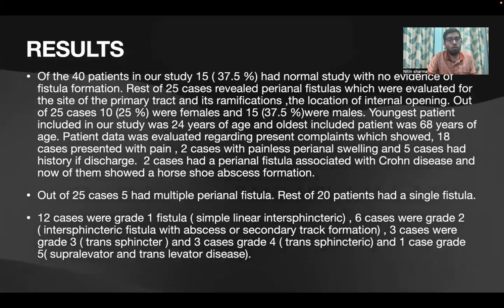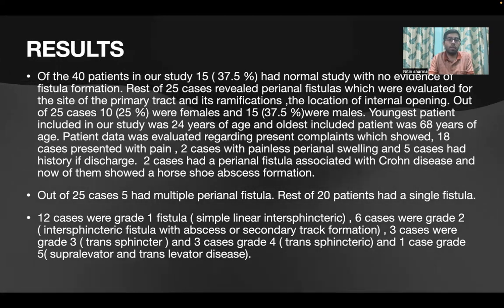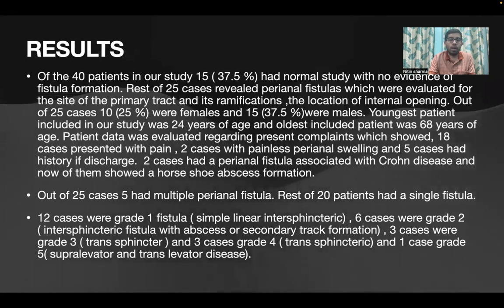One of the Crohn's-associated cases showed a horseshoe abscess formation. Of the 25 cases, five had multiple perianal fistulas and the remaining 20 had a single fistula. Grading revealed 12 cases as grade 1, six as grade 2, three as grade 3, three as grade 4, and one case as grade 5.